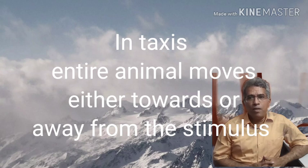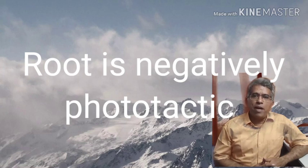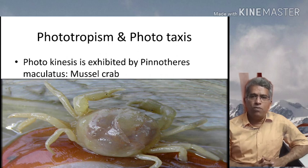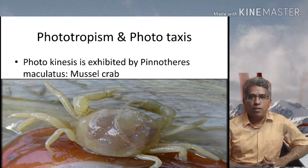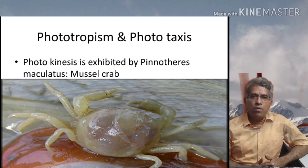Phototropism is exhibited by plants. The root system is negatively phototrophic and the shoot system is positively phototrophic. The larva of Pinnotherus maculatus rotates in the presence of light at a faster rate, and this is called photokinesis. In phototaxis and phototropism there is clear direction, whereas in photokinesis direction does not play any crucial role — the larvae simply rotate with greater speed in the presence of light.